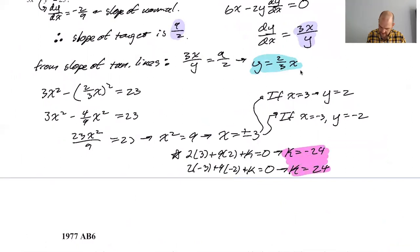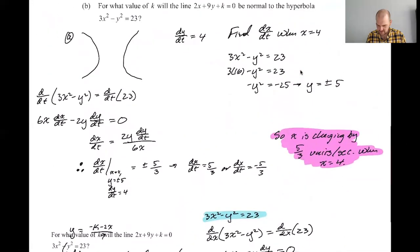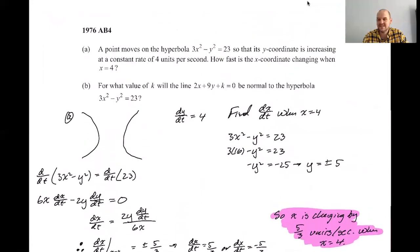The whole thing is the answer. This is a pretty sloppy work. I'm not happy about it, but I wasn't anticipating this question being like so much work. I mean, I think that's it. So we get a negative 24 and 24. And up here we get that the speed basically of x. So the absolute value of dx dt is definitely five thirds. So that has been 1976 AB4. I hope you found this helpful and good luck.